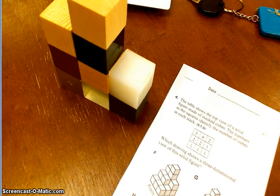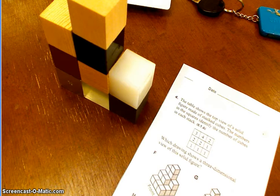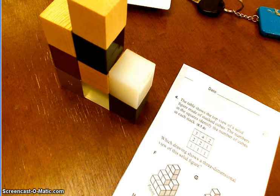Okay, number four says the table shows the top view of a solid figure made of stacked cubes. The numbers in the squares identify the number of cubes in each stack.